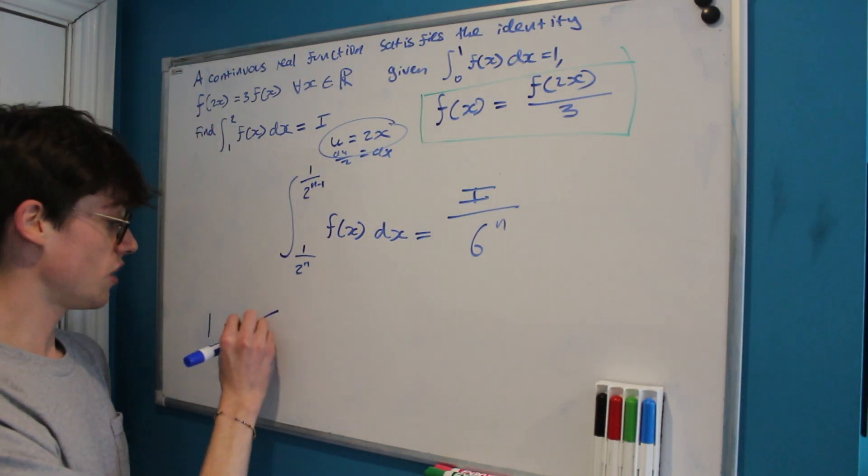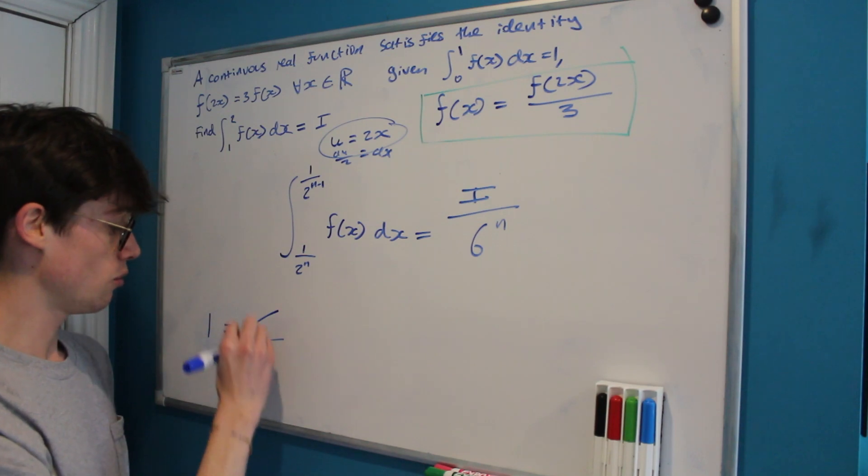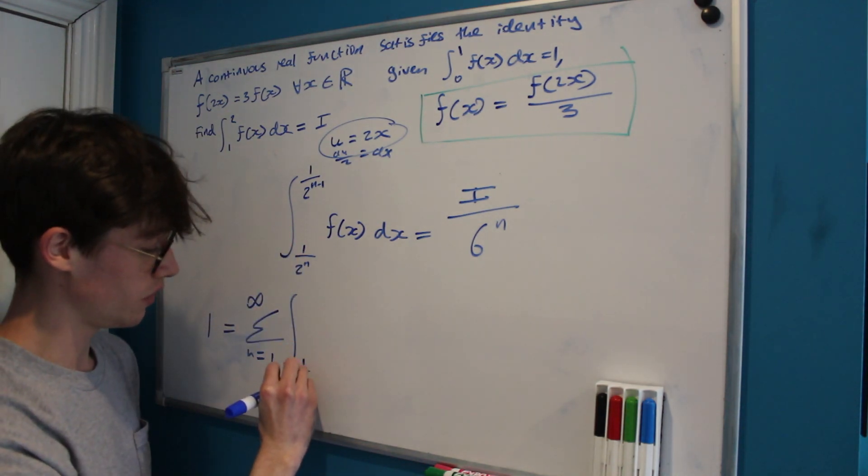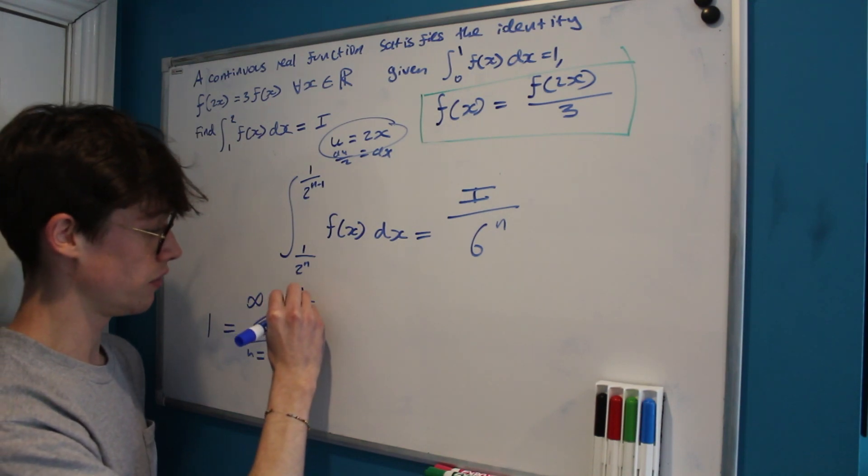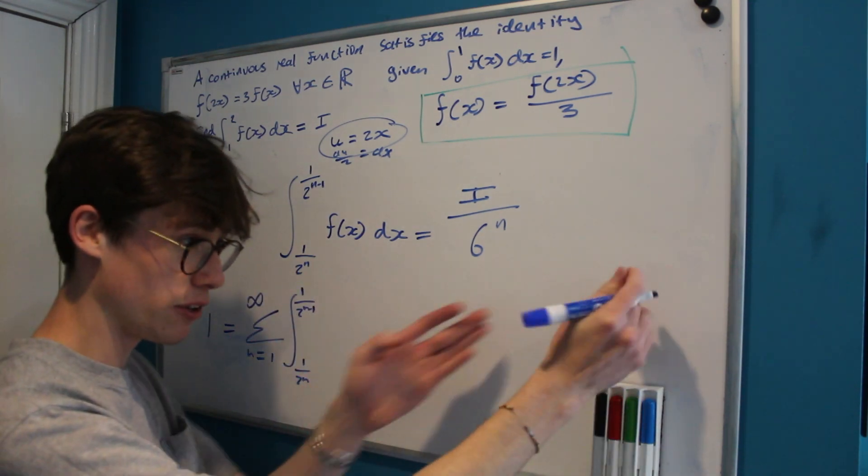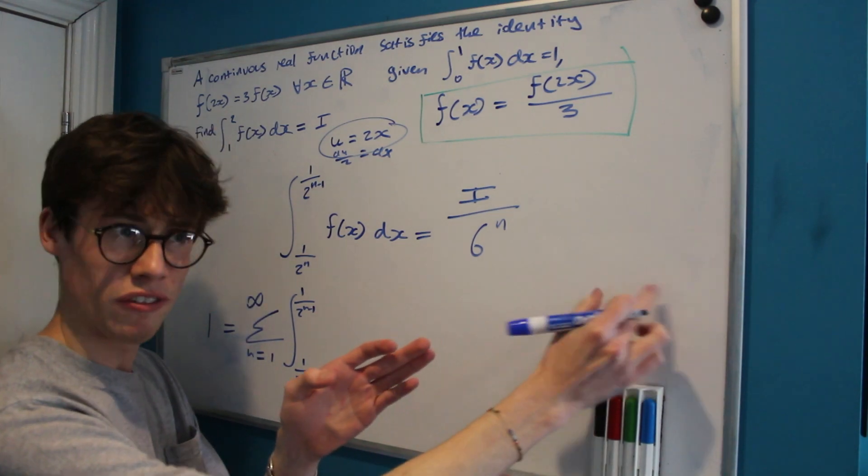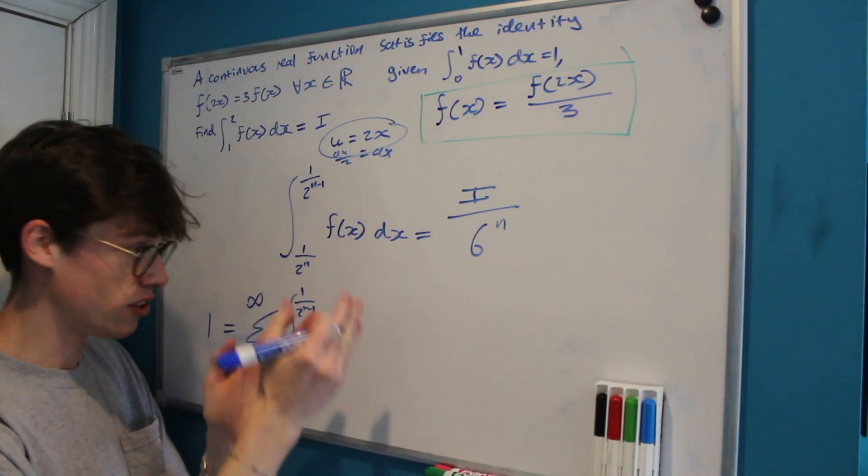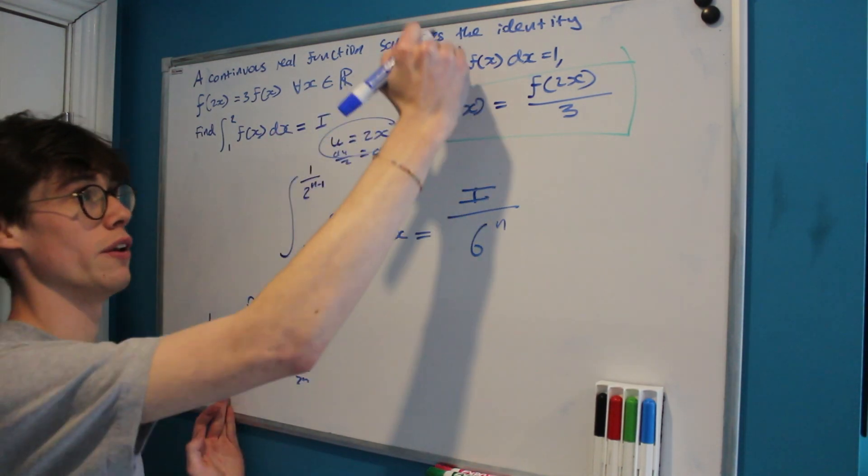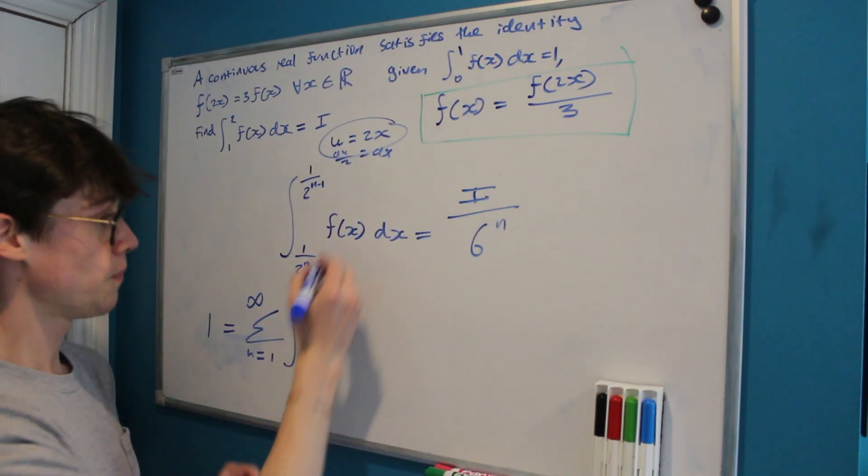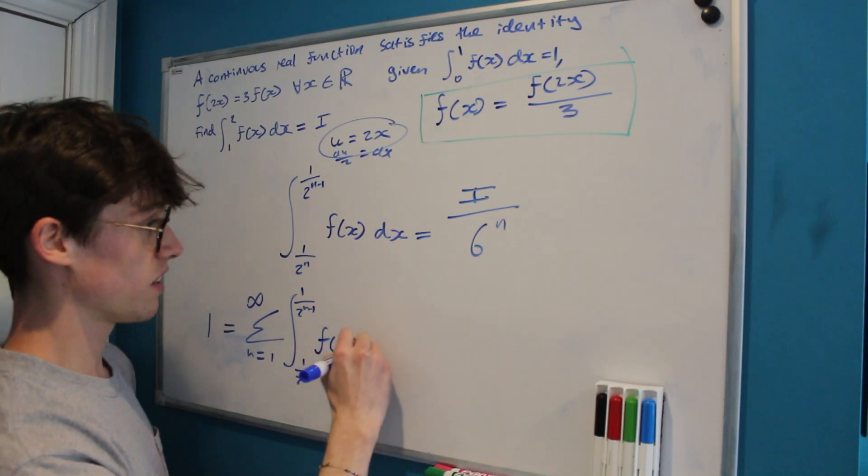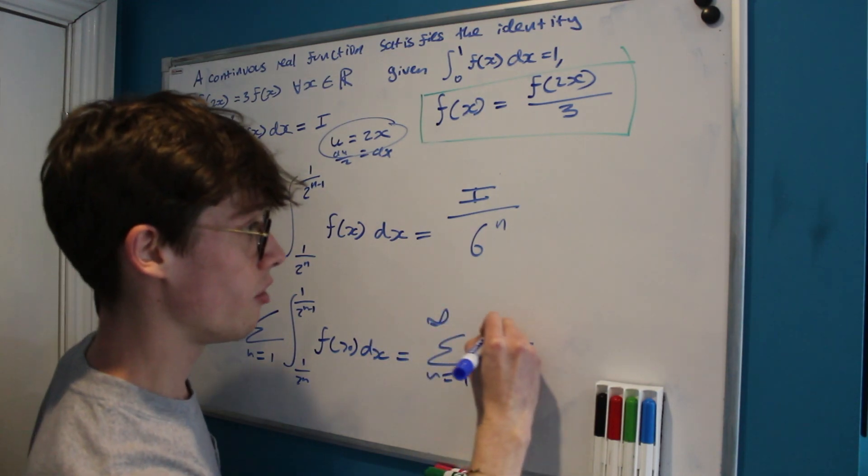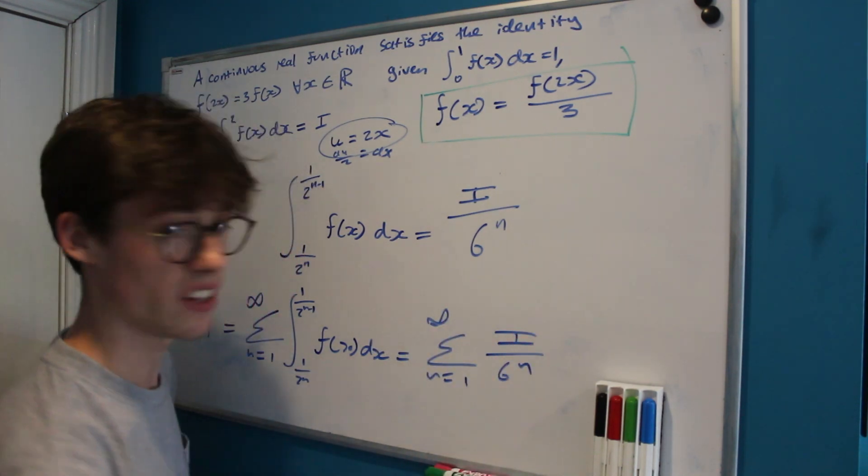1 is equal to the sum from n equal 1 to infinity of this integral 1 over 2 to the n to 1 over 2 to the n minus 1, because if we sum those areas of 1 to a half, then a half to a quarter, then a quarter to an eighth, and an eighth to a sixteenth, we will eventually just reach the integral from 0 to 1, which is of course equal to 1, of f dx, which is also going to be equal to the sum from 1 to infinity of i over 6 to the n.